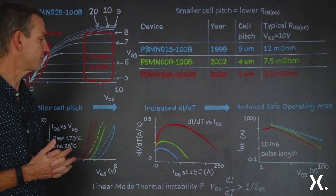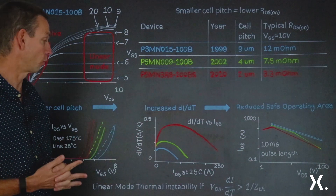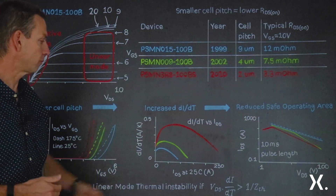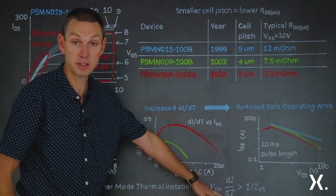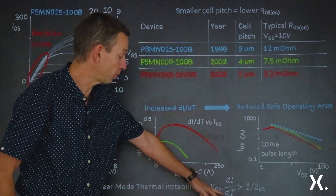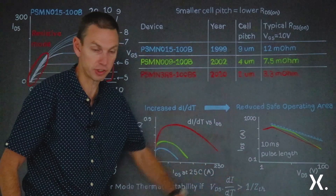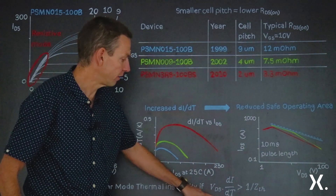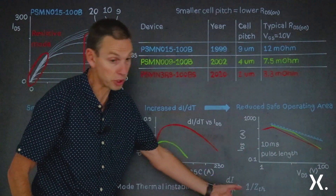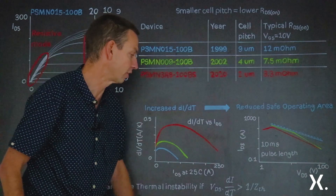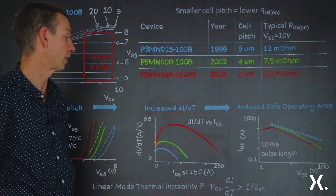The question is: when is this too severe — when can we have stable operation, and when will we get thermal runaway? Mathematically, this instability says we'll get thermal runaway if VDS (the source-drain voltage) multiplied by dI/dT (the change in current with temperature) exceeds 1 divided by the transient thermal impedance ZTH. In words: if the increase in power with temperature exceeds the rate at which we can extract power with increasing temperature — that is the mathematical condition for when thermal runaway could happen.